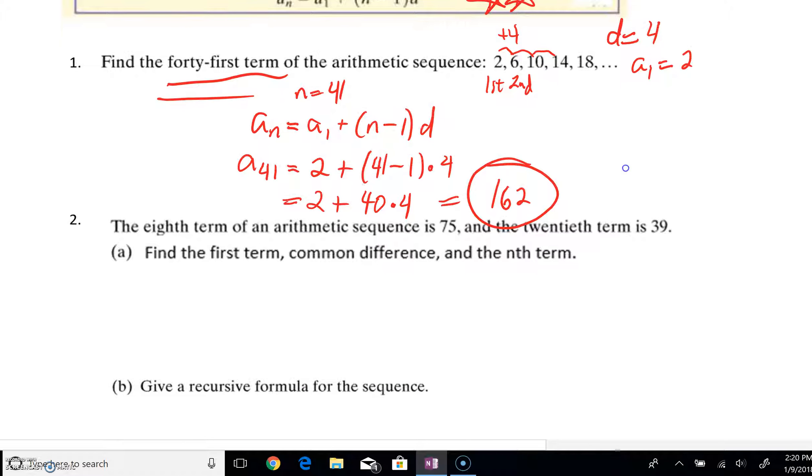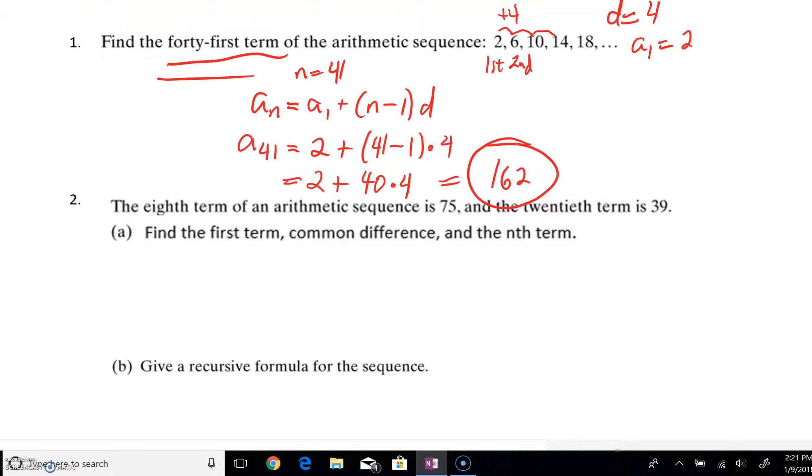Well, not all of the problems in this section are going to be simply find a specified term. Sometimes you might be given some terms in an arithmetic sequence, and you'll be asked to actually unlock what that sequence truly is looking like. Take a look at number 2 for an example. You might be told that an 8th term of an arithmetic sequence is 75, and the 20th term is 39. You'll be asked then to find the first term, the common difference, and a general nth term. Well, here's what's going on.